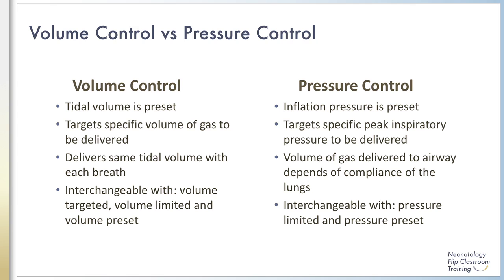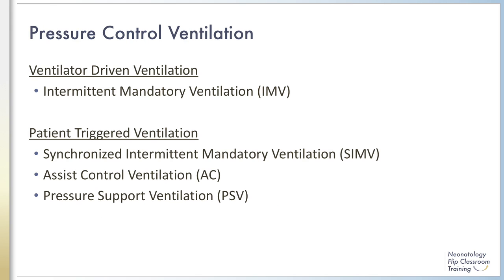In contrast to volume ventilation, in pressure control ventilation the volume of gas delivered to the airway depends on the compliance of the lungs and varies. The terms volume control, volume-limited, and volume-preset are often used interchangeably, as are pressure control, pressure-limited, and pressure-preset. This module focuses on pressure control modes, including IMV, SIMV, assist control (AC), and pressure support ventilation (PSV).